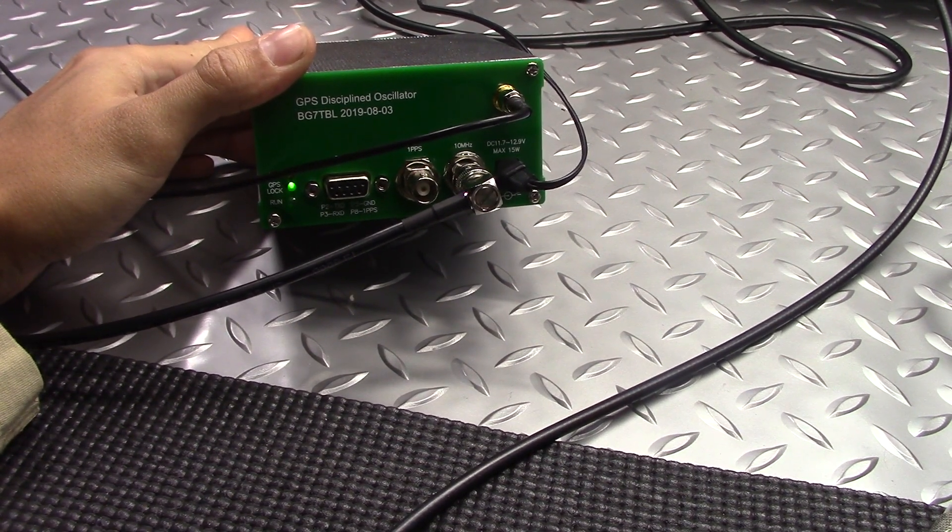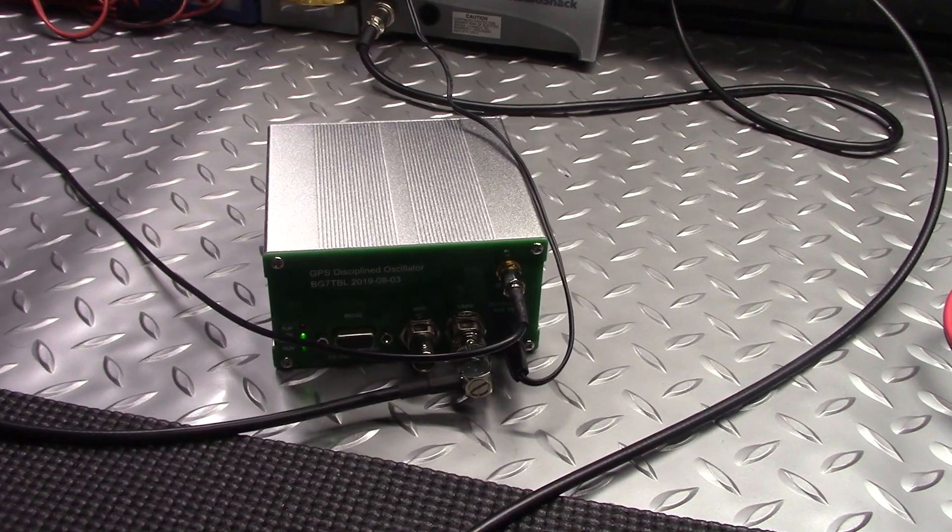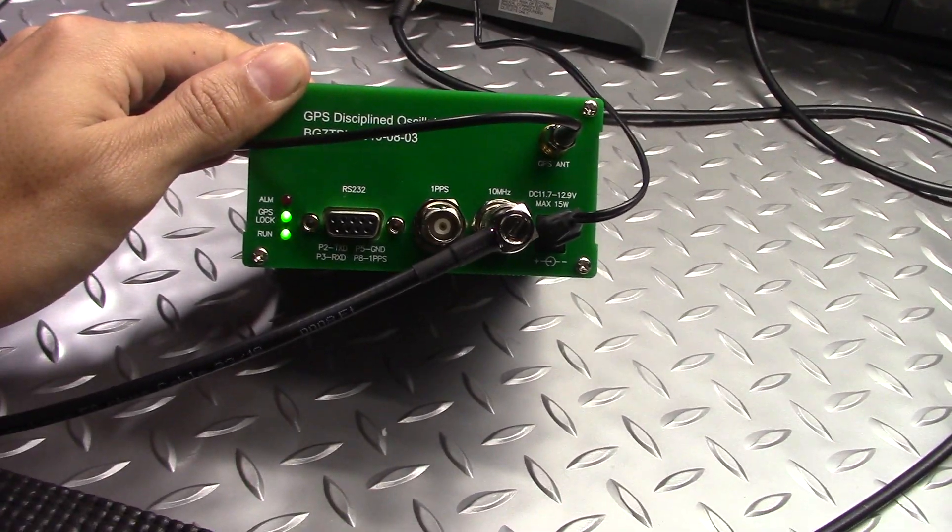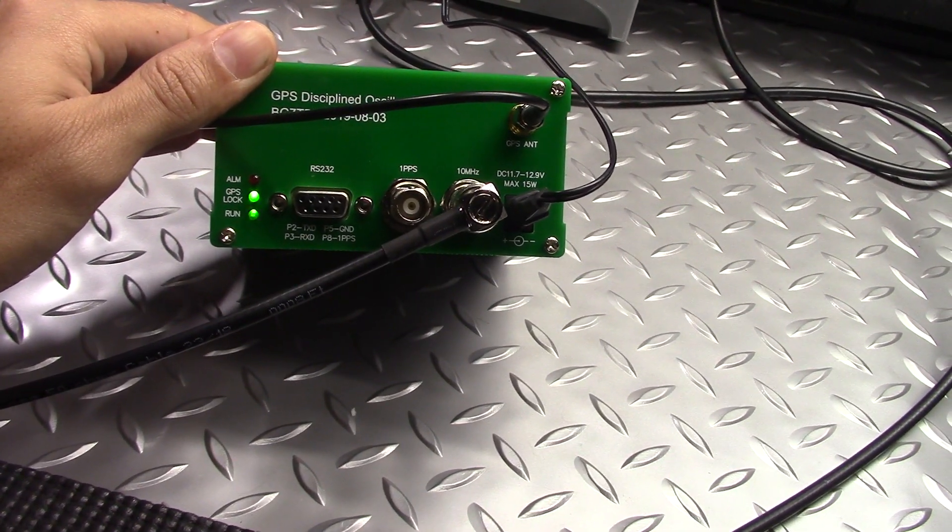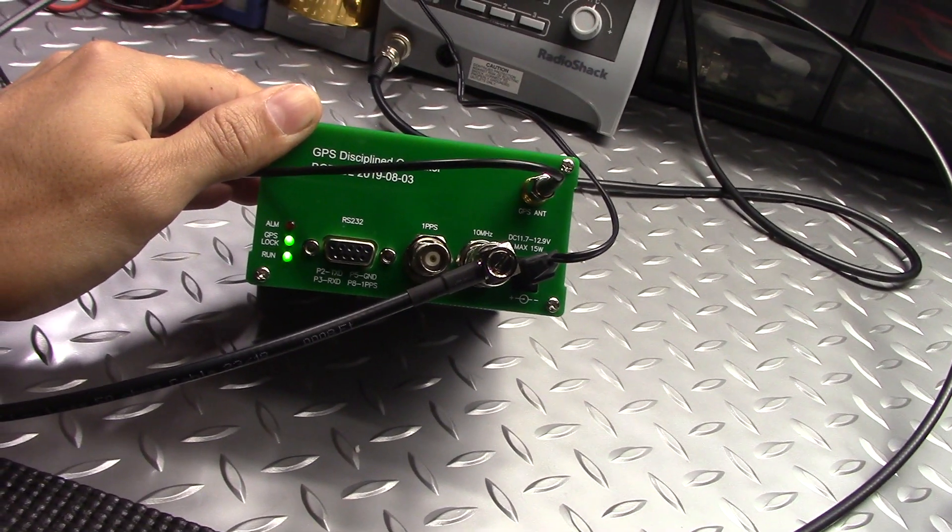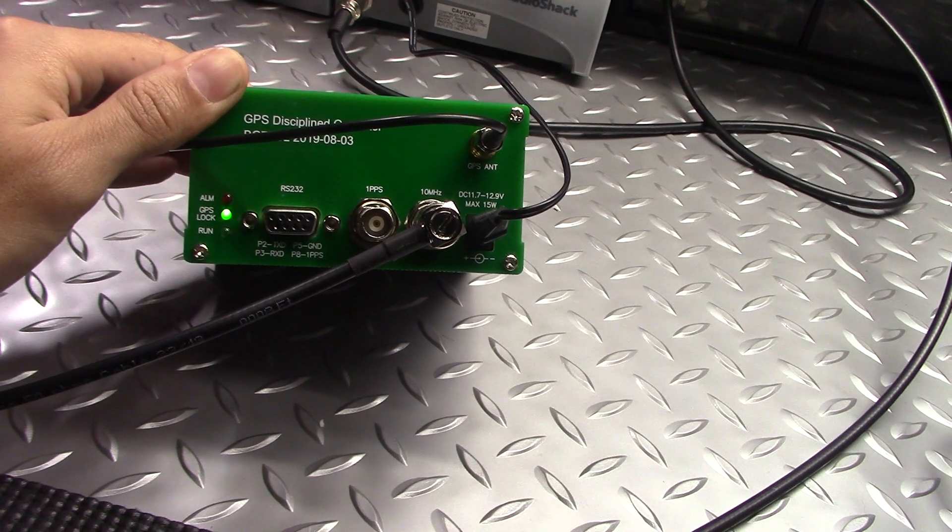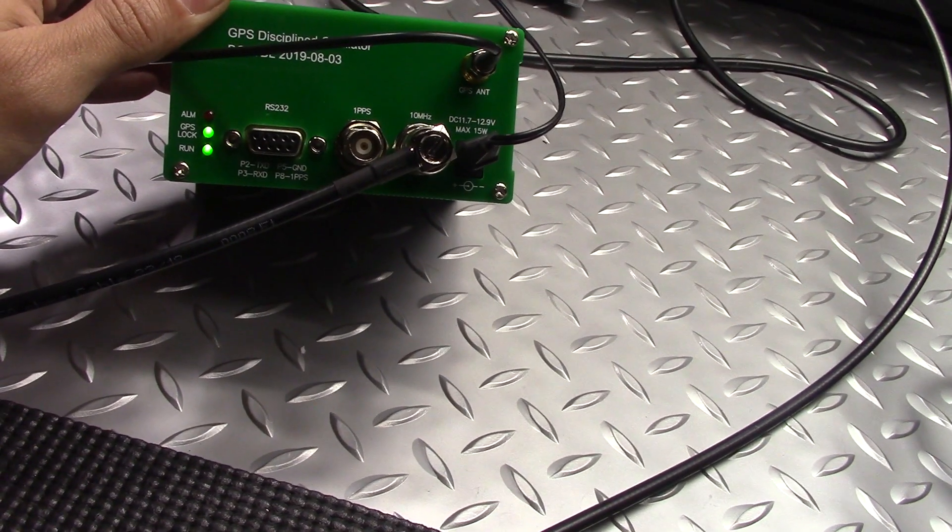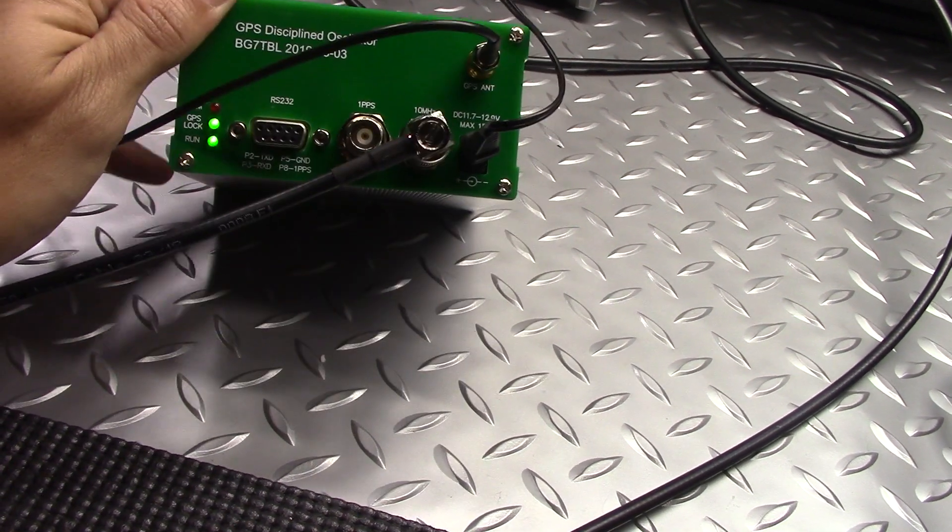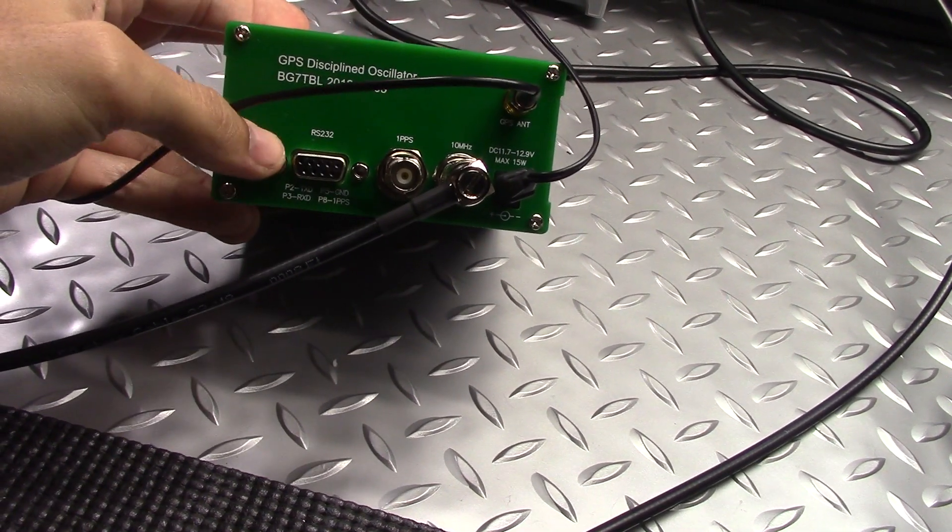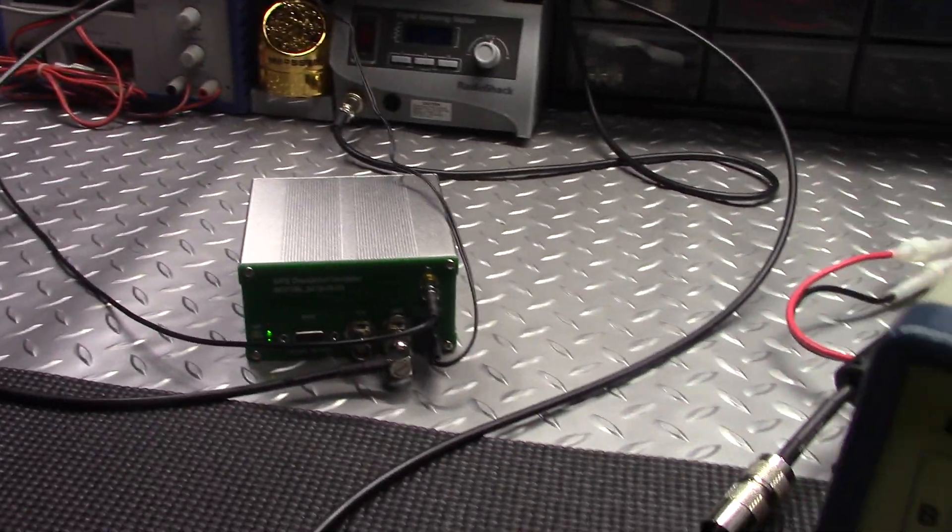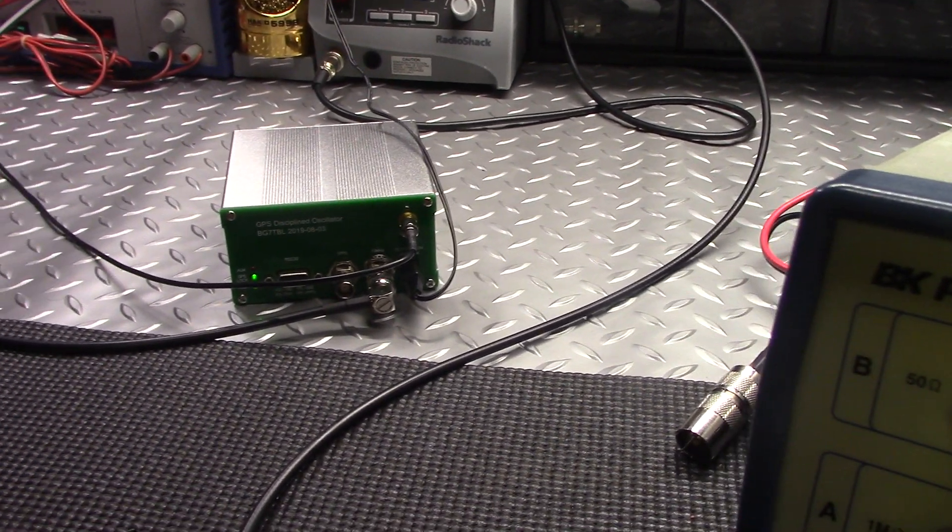I keep this thing on 24 hours a day, seven days a week. It's on lock. I guess I should go over them three lights there. Alarm is when that top red LED would be flashing if I plug it in and it's cold. GPS lock will be flashing, and then it'll lock on and it goes solid on lock. Run is what keeps flashing. You could also hook these up, it's got a port here to a computer, and you could see the satellites that it's hitting off of and some more information.